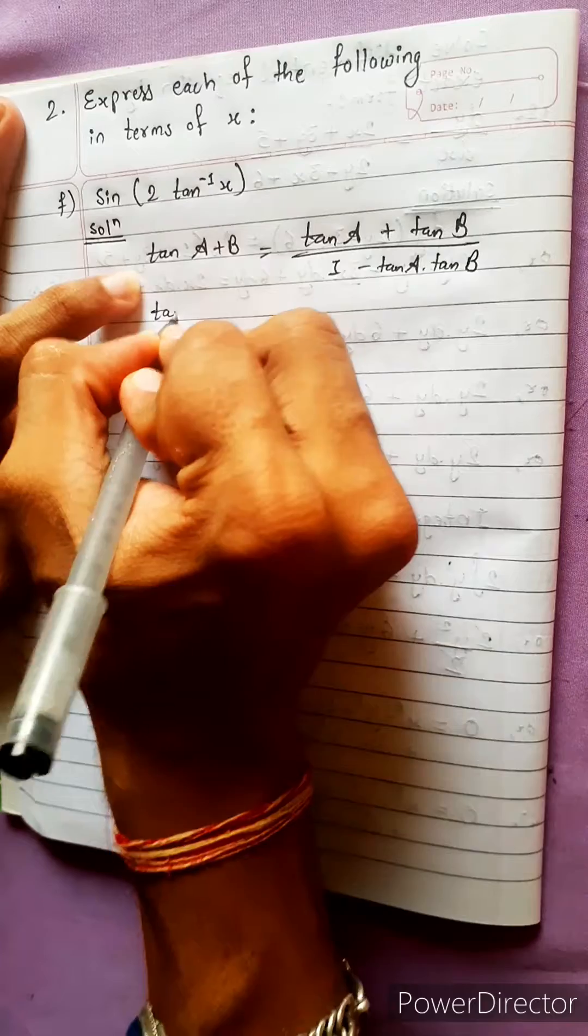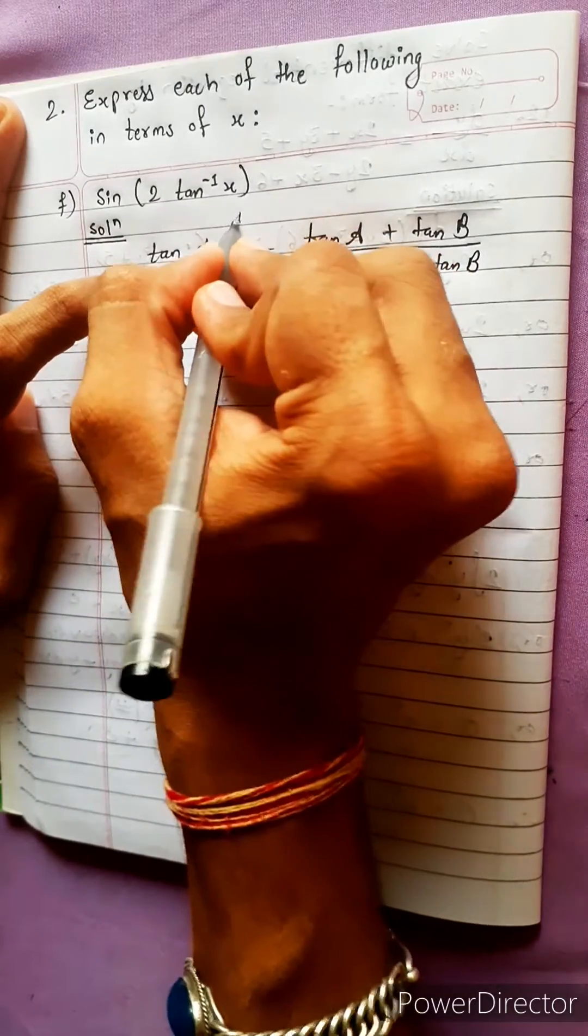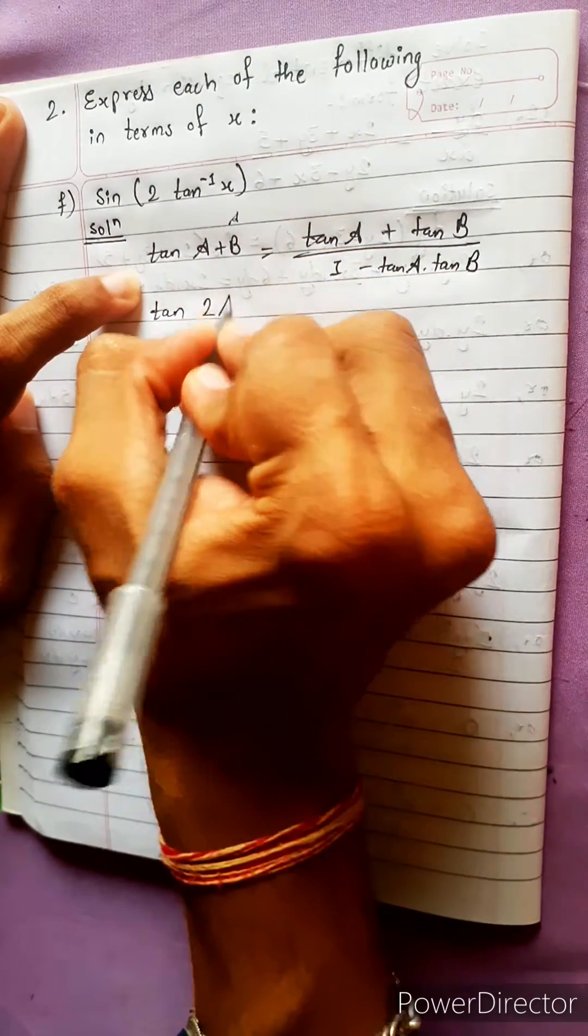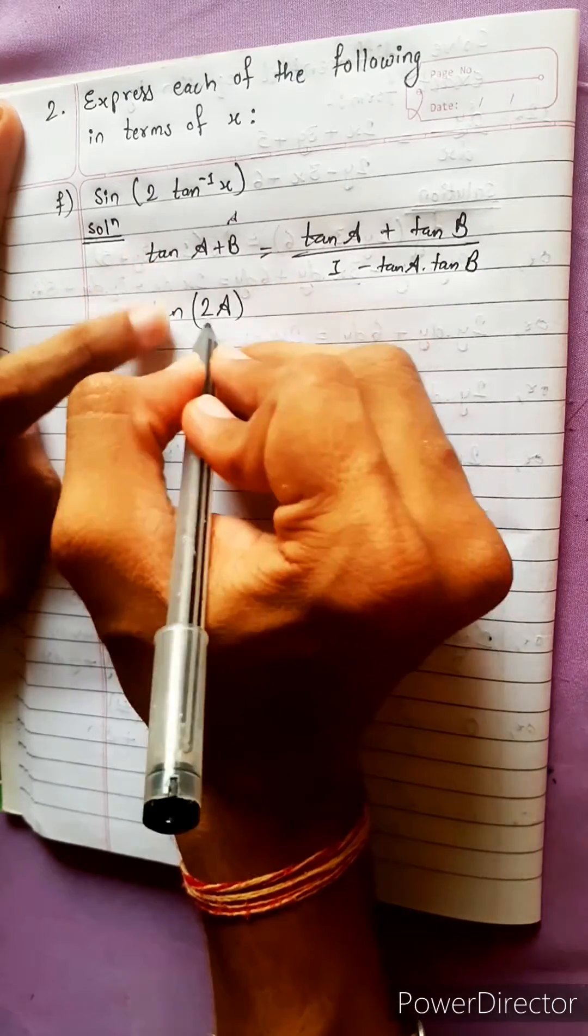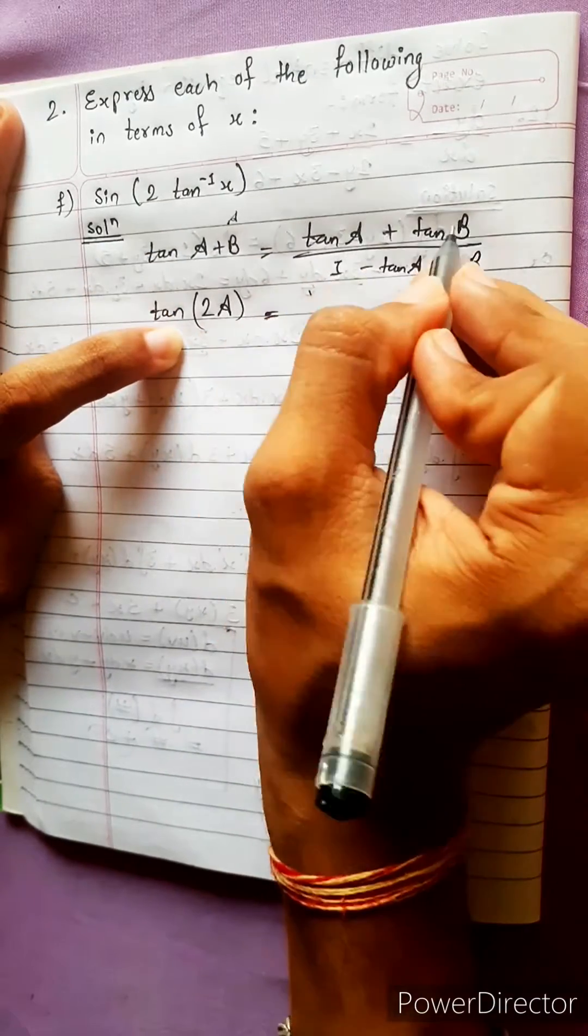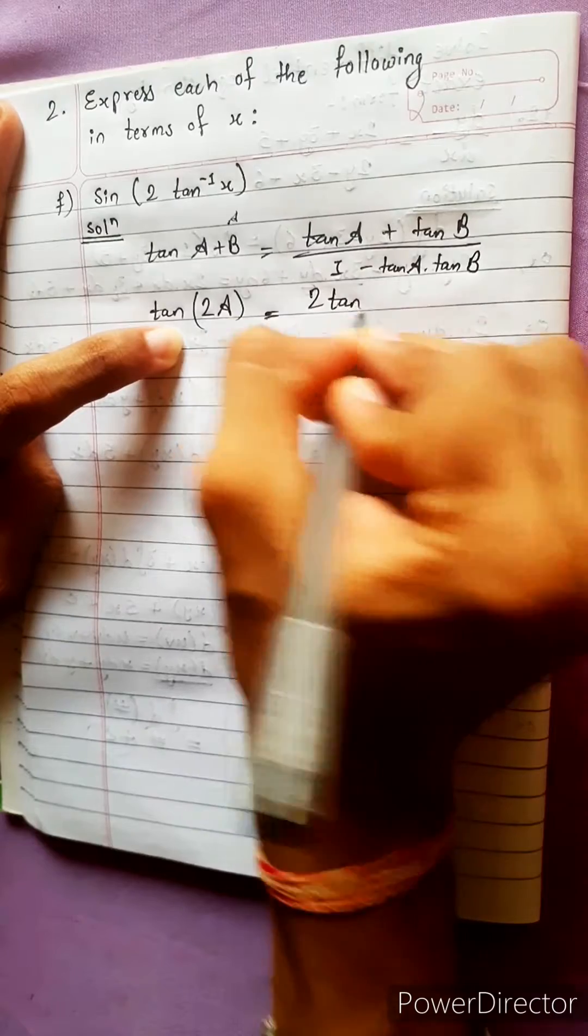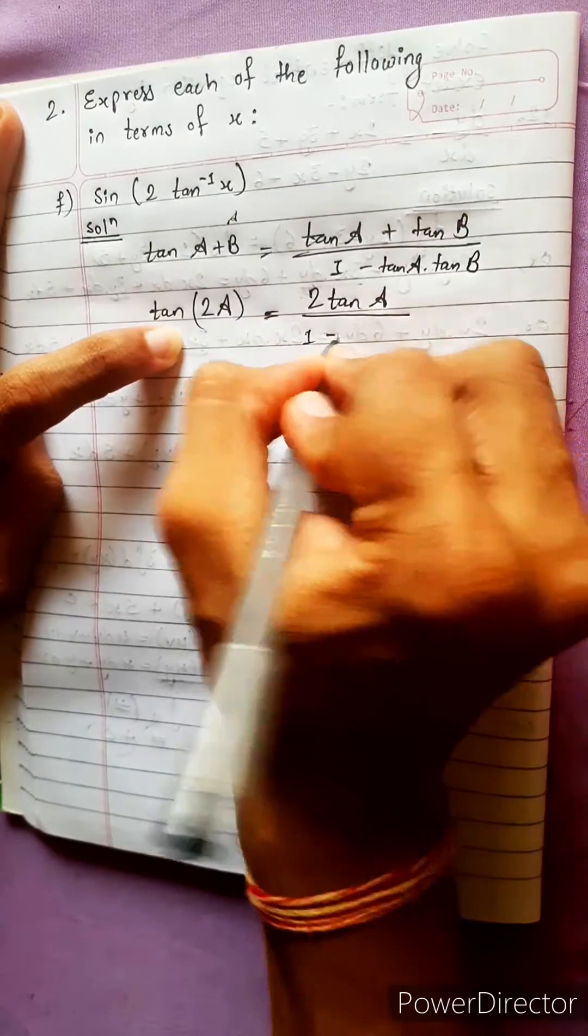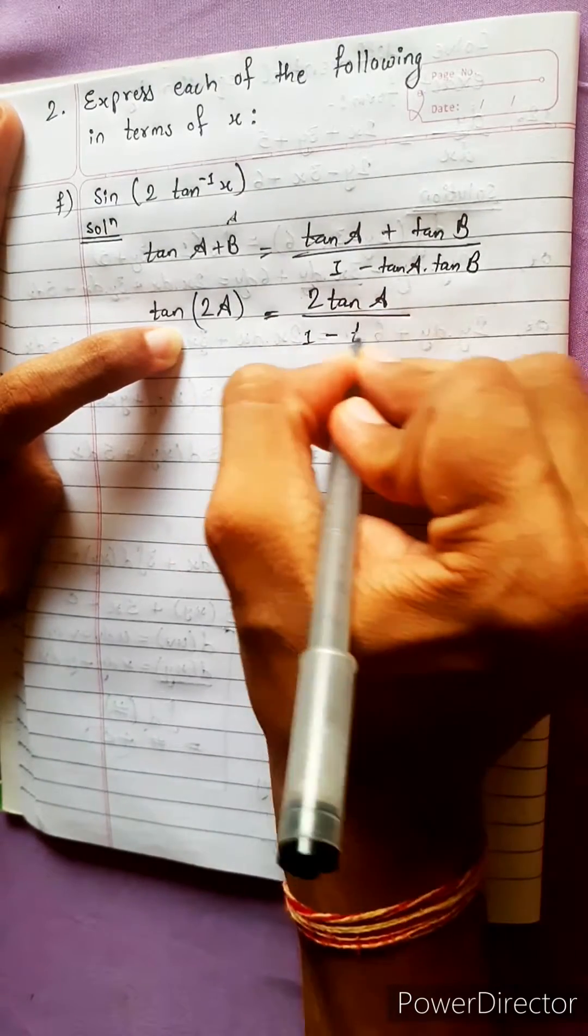In place of tan(A + B) we write here A plus A, then it will be tan(2A). If A plus A means A plus A, here will be tan A plus tan A, 2 tan A divided by 1 minus tan A into tan A, tan squared A.